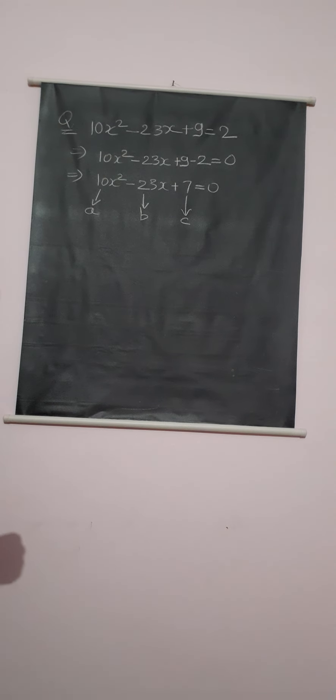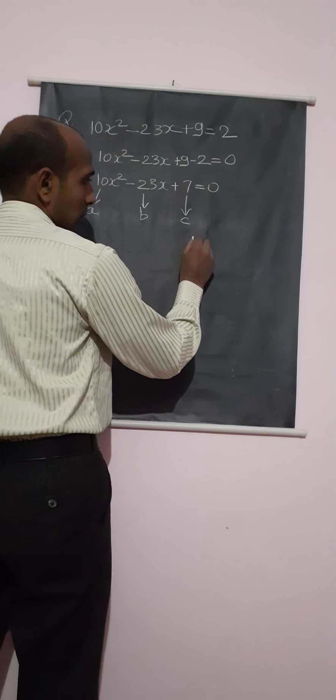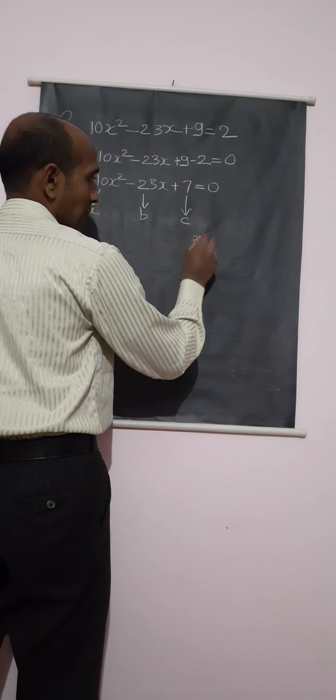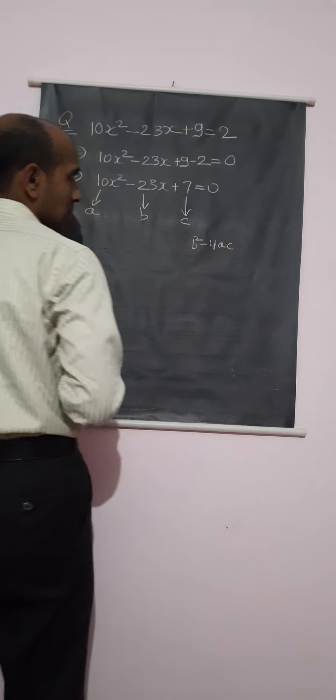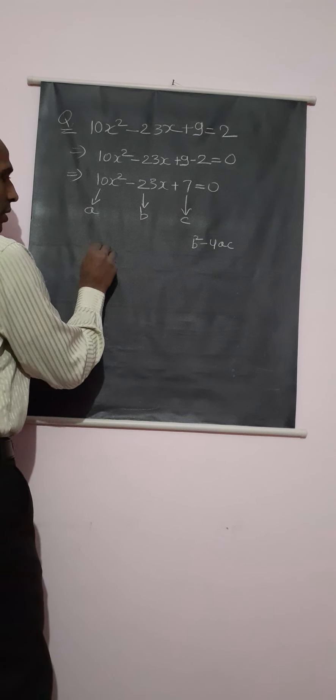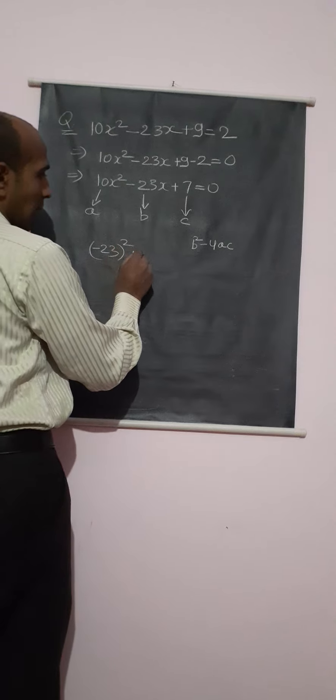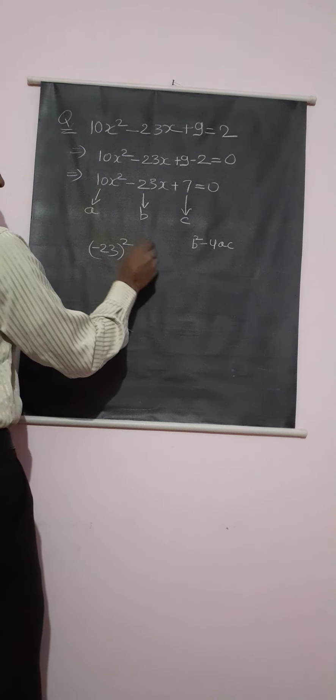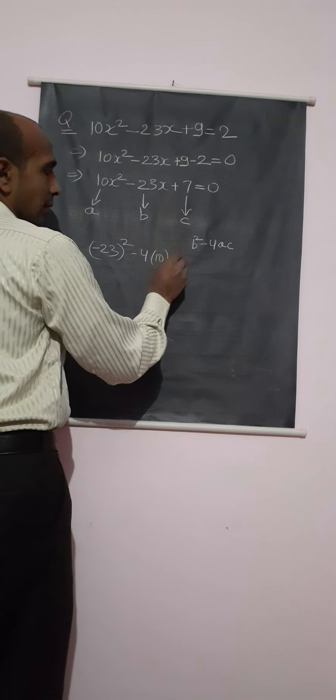So we can get the x values by the formula: b² - 4ac. b² - 4ac means (-23)² - 4 × 10 × 7.